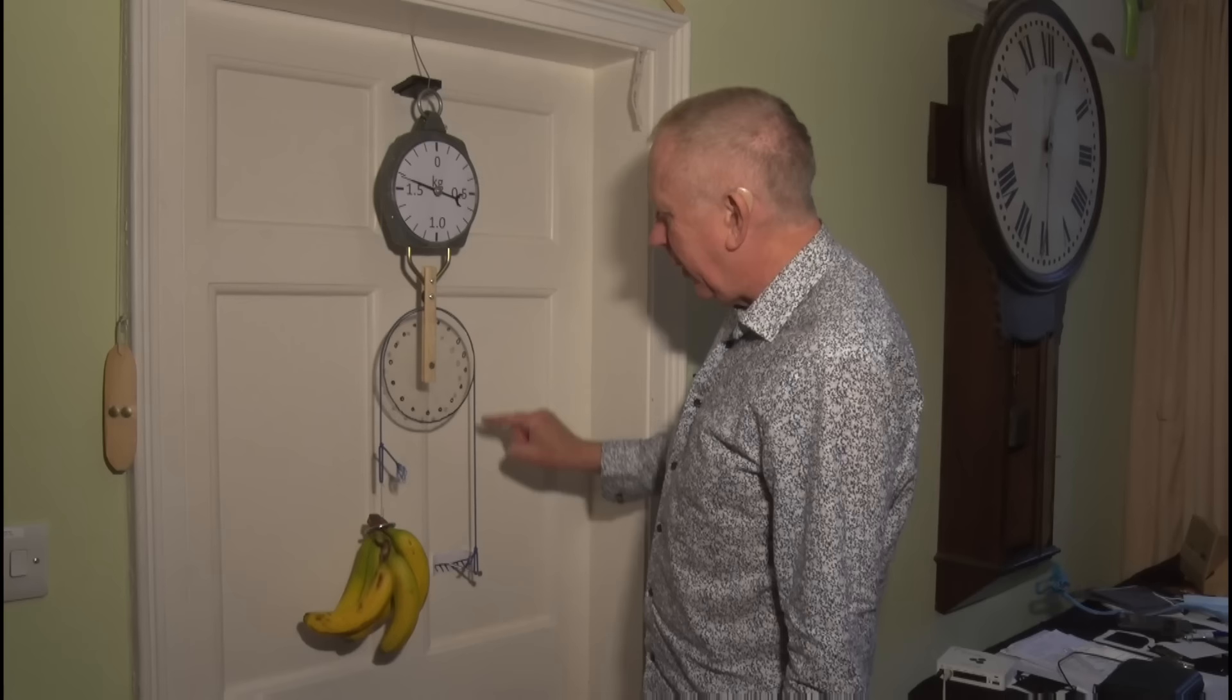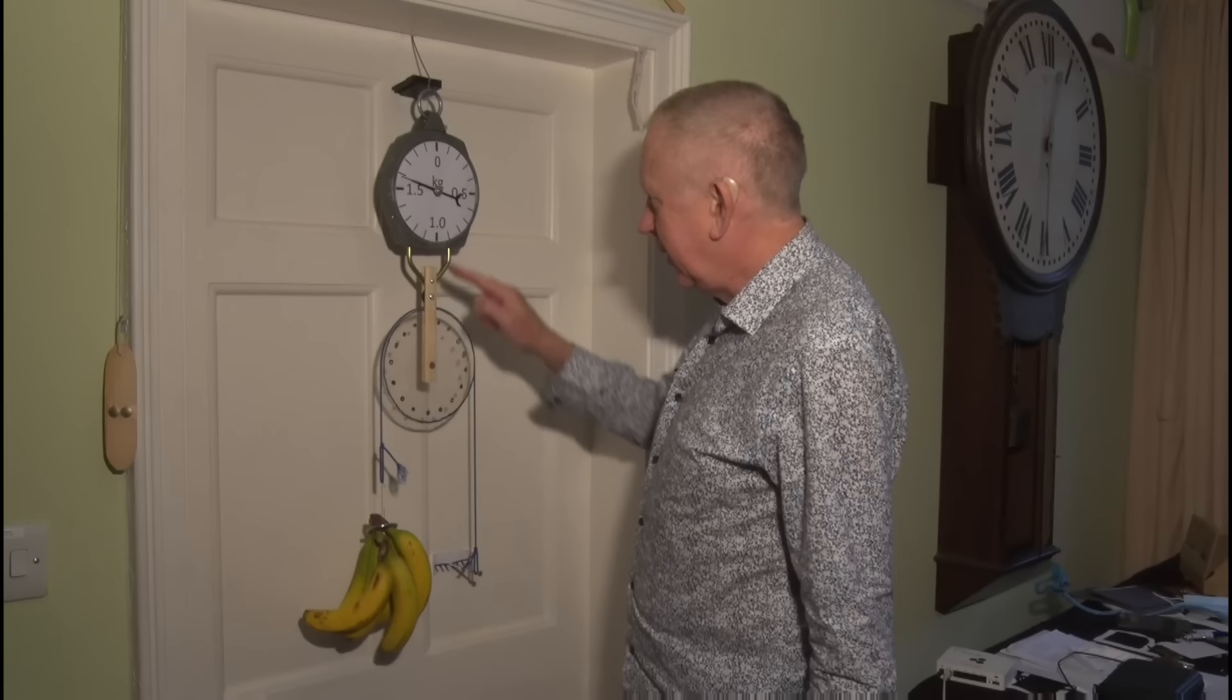So the pulley's being pulled down by twice the weight of the bananas, which is exactly what we see up there, 1.6 kilograms. There we go. That's how you weigh bananas.